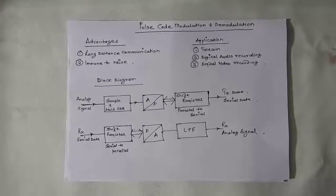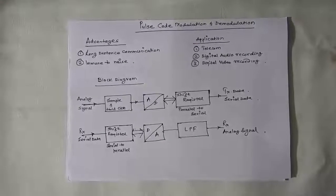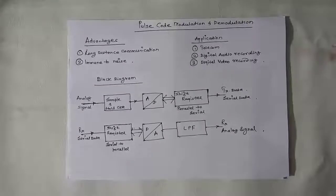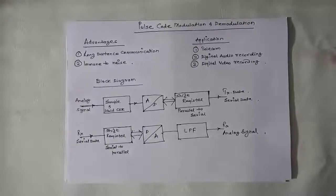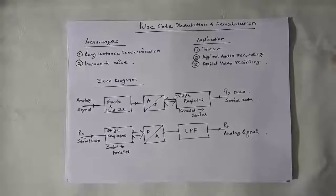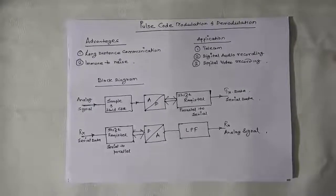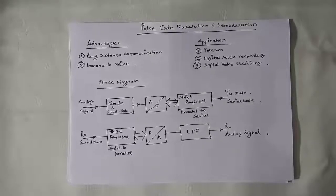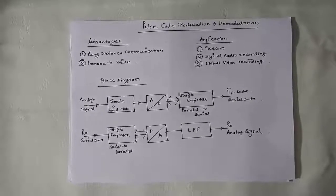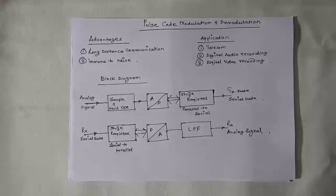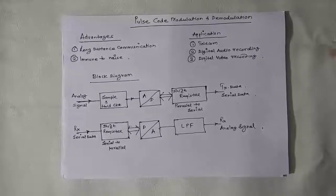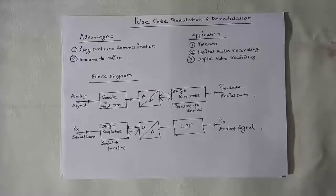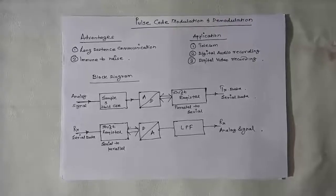For our experiments, we use an 8 bit A to D converter. This converter converts each sample into 8 bit data which is available in parallel at the output of the digital converter.